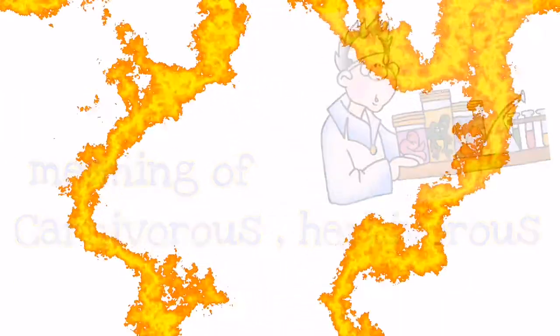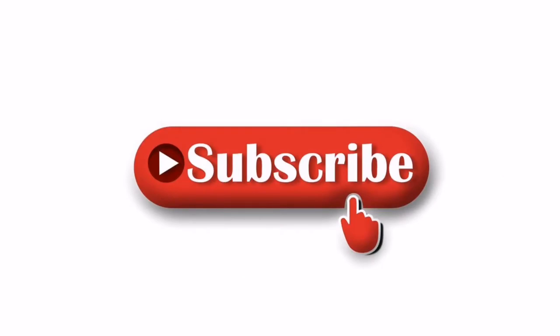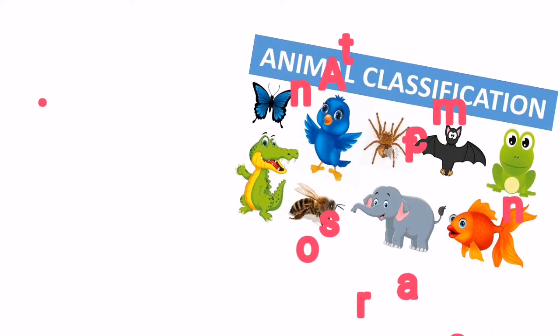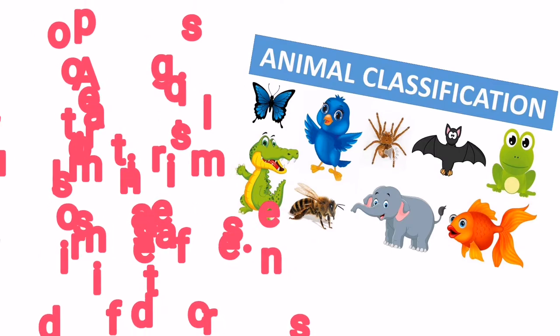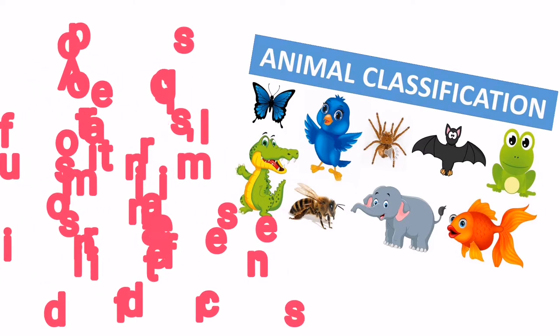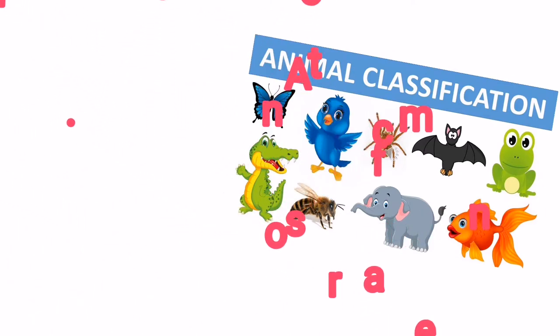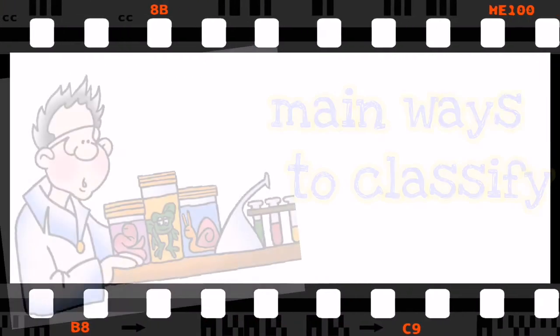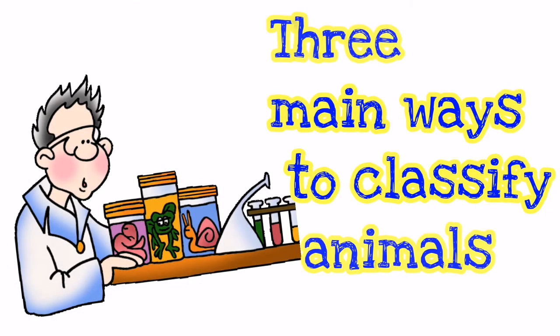But before going further, don't forget to hit the bell button below and subscribe so you will be notified of my upcoming videos. Now, by definition, animal classification is a process of sorting out animals' similarities and differences. You have to place them in groups and then breaking those groups into subgroups. Basically, animals are classified into these three main ways.